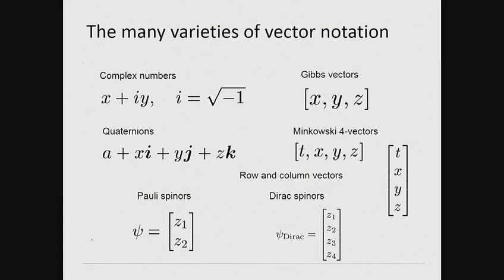The Gibbs vector system, commonly utilized today, was adopted over 100 years ago. Since then, the original formalism has required several extensions in order to describe more modern scientific theories.